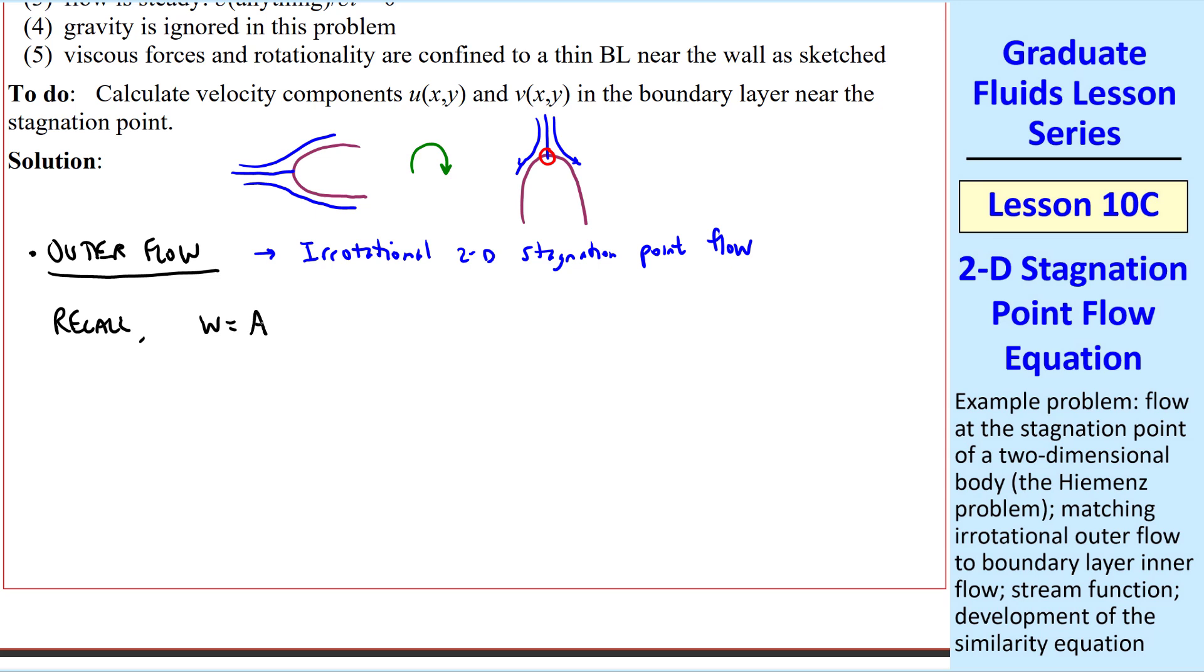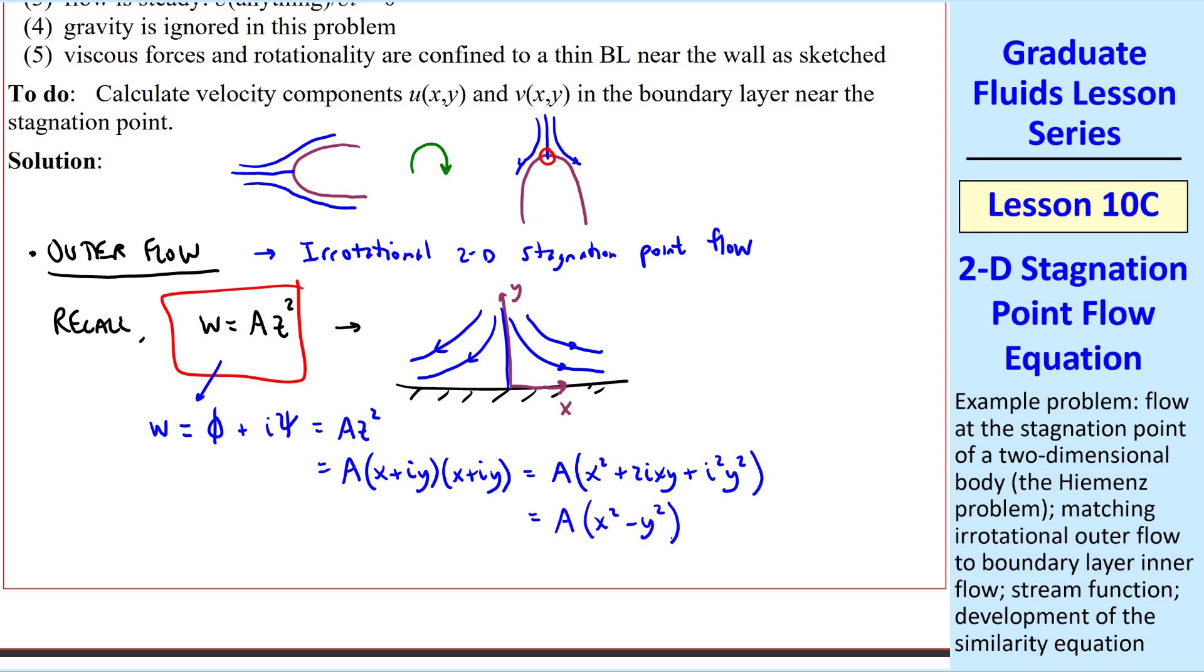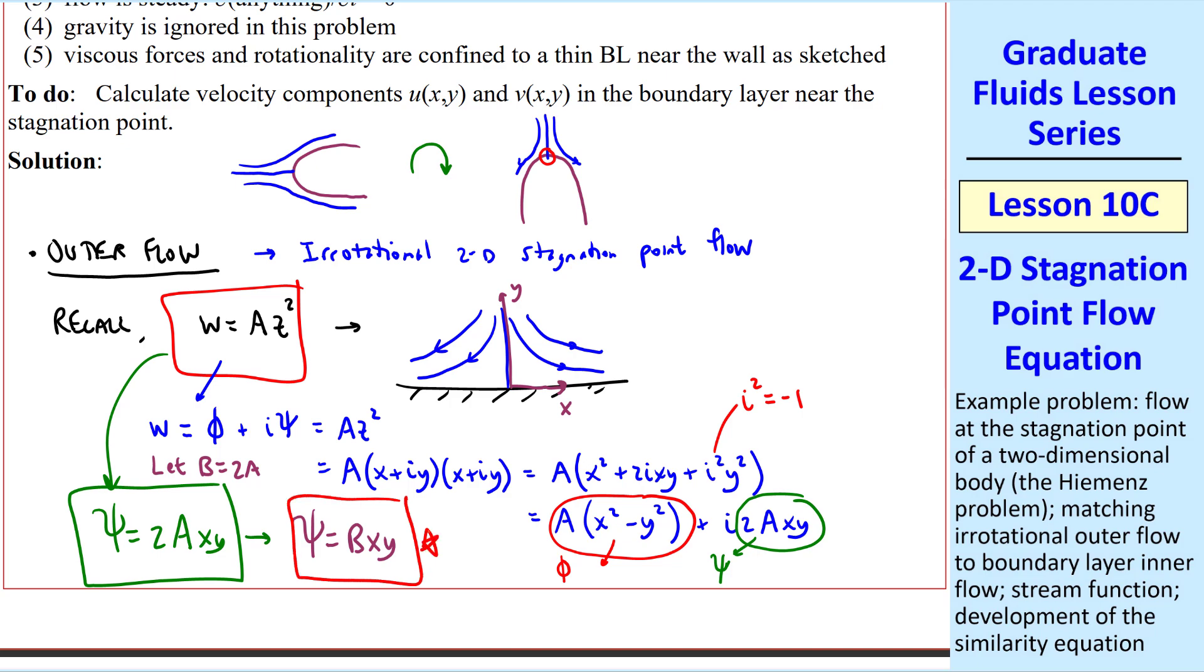Recall that for a complex potential w = az², we described the potential flow in the xy plane as 2D stagnation point flow, where we can split w into potential function φ + iψ, which is the stream function. Z is x + iy. So this becomes a(x² + 2ixy + i²y²), which we can regroup with all the real terms, recognizing that i² = -1, and the imaginary terms. So this first grouping of the real terms is φ, and the component of the imaginary terms is ψ. So from this, ψ = 2axy. But instead of carrying this 2 along, let's let b = 2a. So finally ψ = bxy in the potential outer flow for a 2D stagnation point.